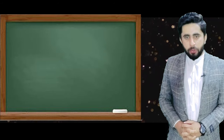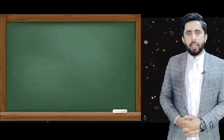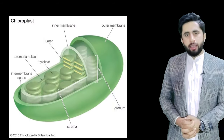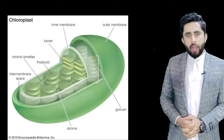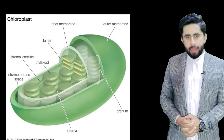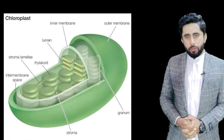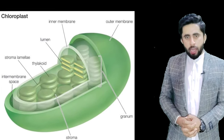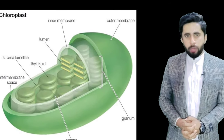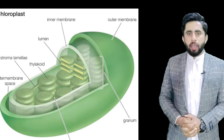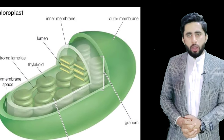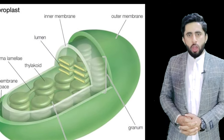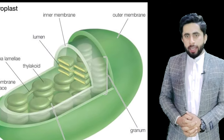Chloroplast کو microscope کے نیچے دیکھا جائے تو اس کے تین بنیادی حصے ہیں: envelope, grana اور stroma۔ اس کا envelope دو membranes پر مشتمل ہوتا ہے: outer membrane اور inner membrane۔